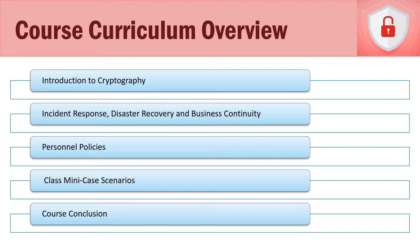In section eighteen, we talk about personnel policies. In IT security, it always starts with policies at the top that trickle down to procedures, and everyone needs to follow them. We talk about things such as acceptable use, code of ethics, and separation of duties. Section nineteen has our two class mini case scenarios, and section twenty concludes the course.